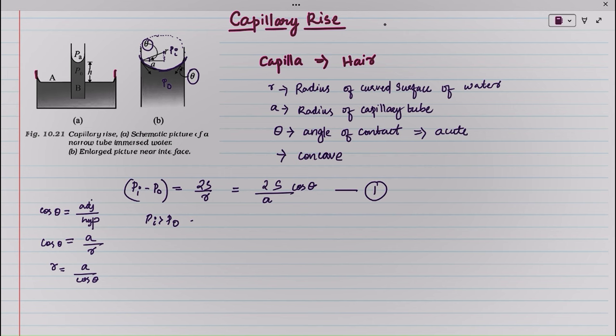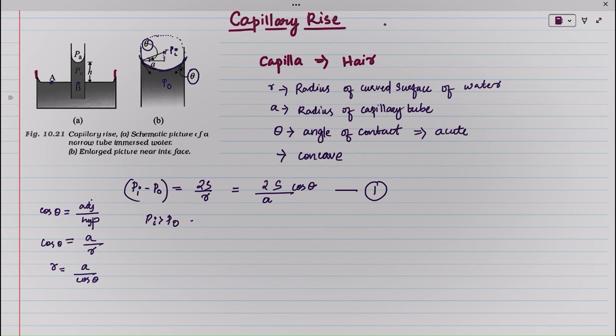Consider two points A and B in figure A. They must be at the same pressure. Point A is here and point B is here. Since they are at the same level, the pressure at A equals the pressure at B.